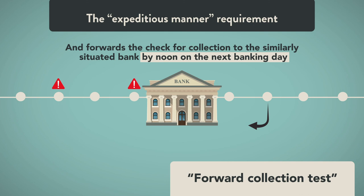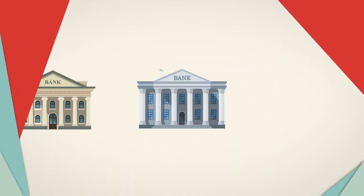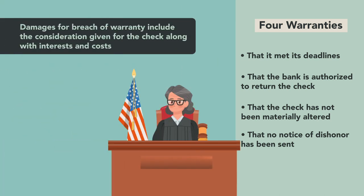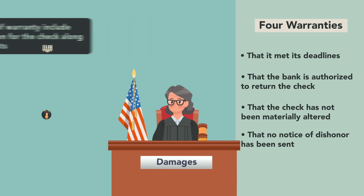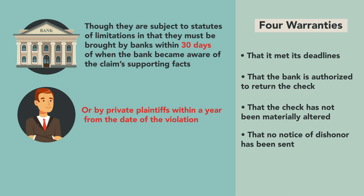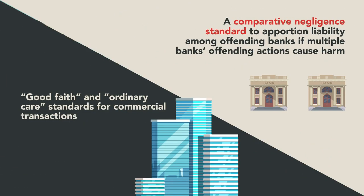In returning a check to the depository bank, the payer bank makes four warranties: that it met its deadlines, that the bank is authorized to return the check, that the check has not been materially altered, and that no notice of dishonor has been sent. Damages for breach of warranty include the consideration given for the check along with interest and costs. Lawsuits for breach of warranty may be brought by the bank or a private party, subject to statutes of limitations: banks must bring claims within 30 days of when the bank became aware of the supporting facts, and private plaintiffs within a year from the date of the violation. The regulation imposes good faith and ordinary care standards and uses a comparative negligence standard to apportion liability among offending banks if multiple banks' actions cause harm.